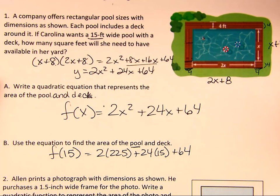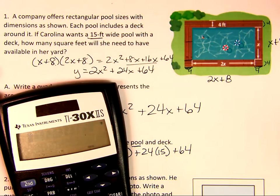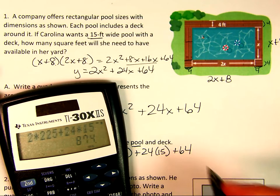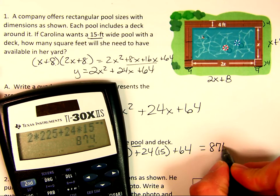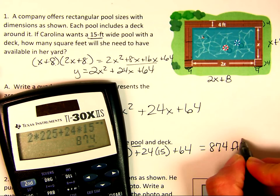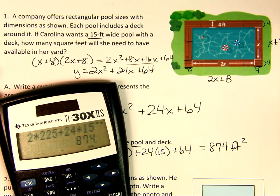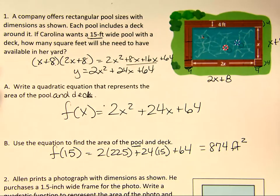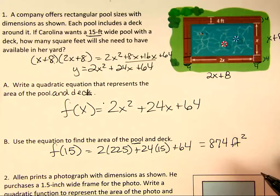And I am going to use my handy-dandy calculator. So 2 times 225, plus 24 times 15, plus 64. And it is 874 feet squared. So she needs a little under 900 square feet of yard area for her to put that pool in.